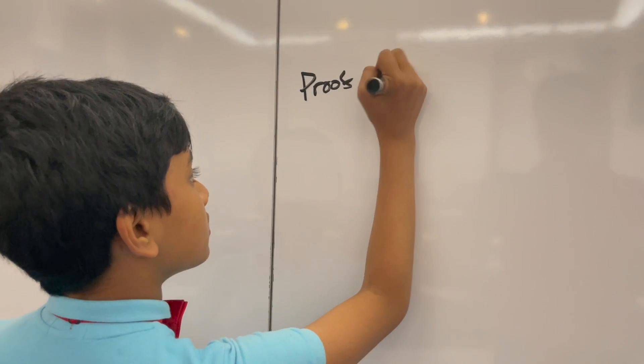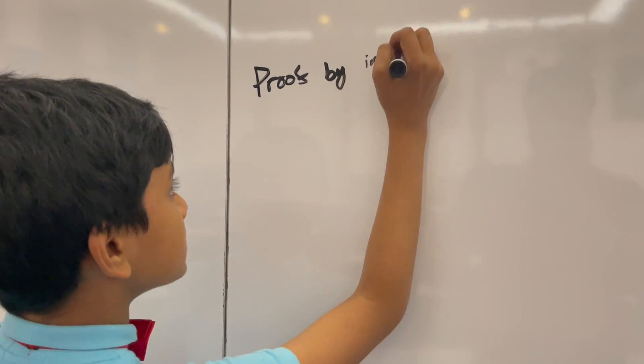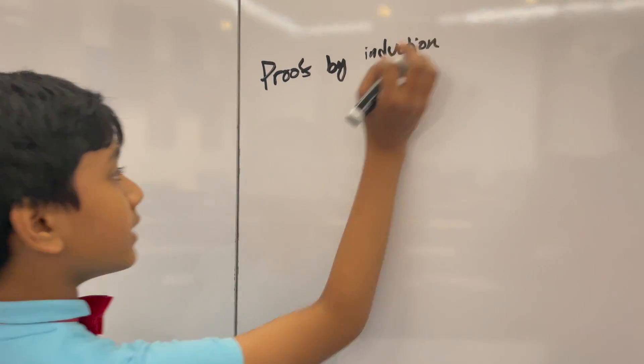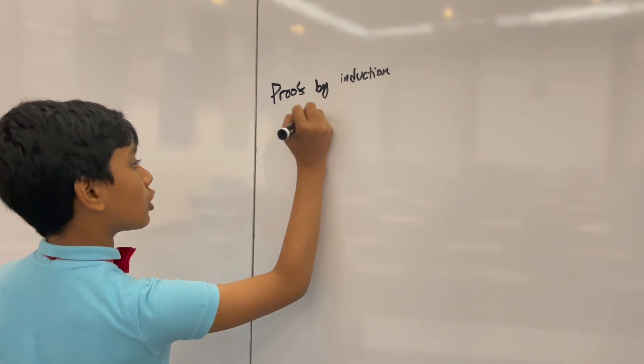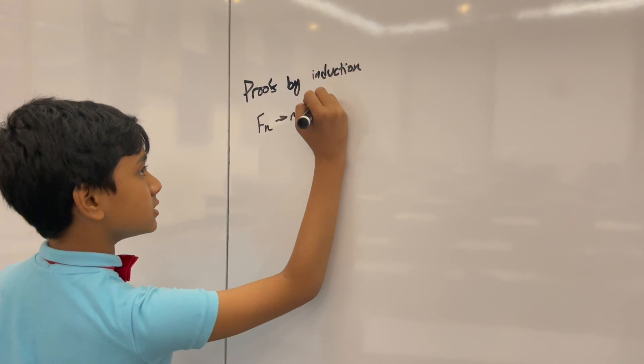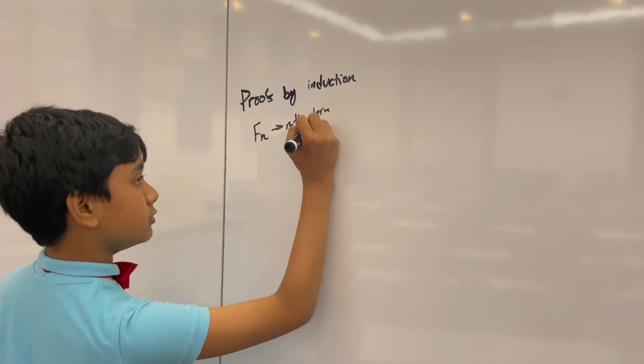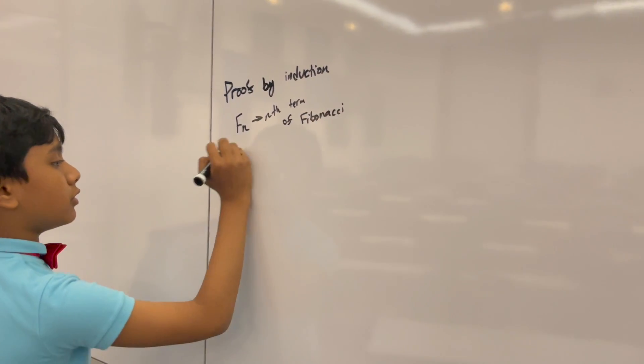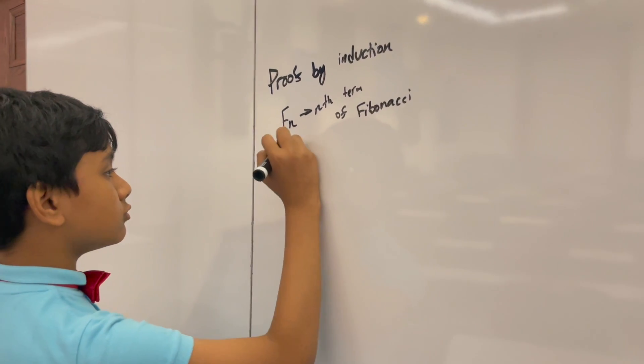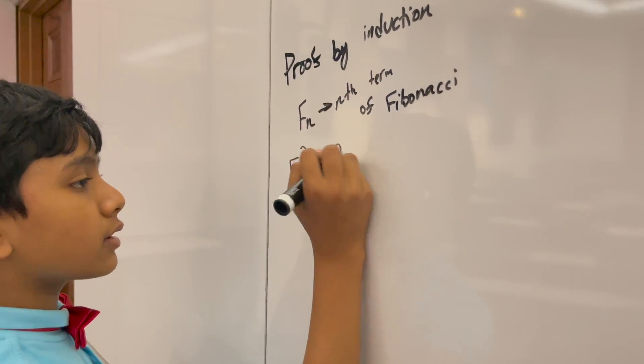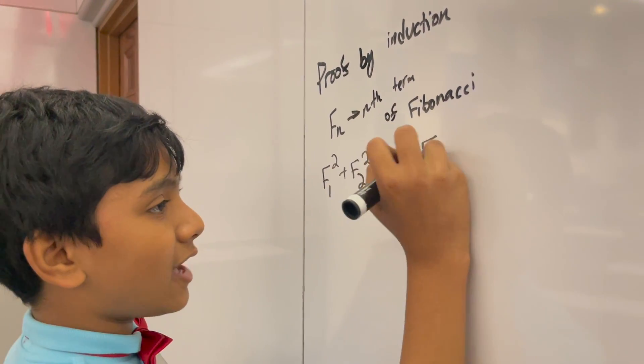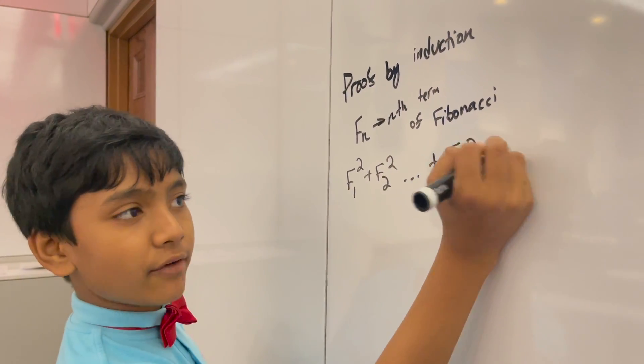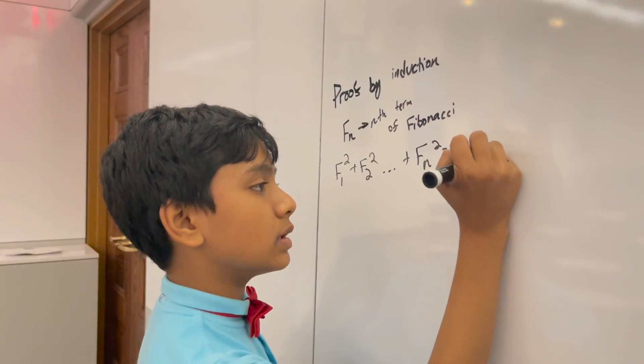There's a very nice proof by induction problem. Let Fn be the nth term of the Fibonacci sequence. What I want to prove is that F1 squared plus F2 squared, etc., plus Fn squared is equal to Fn times Fn plus 1.